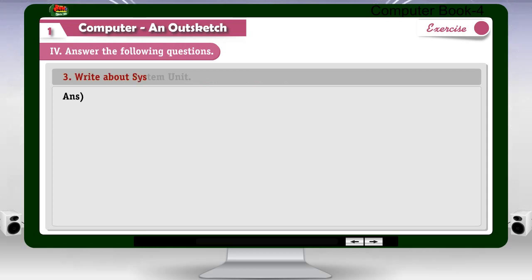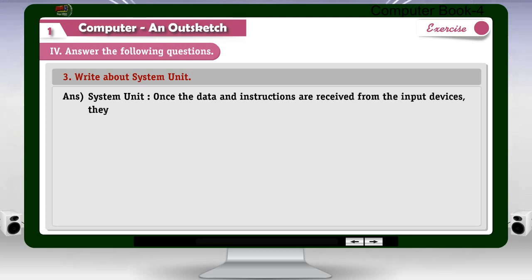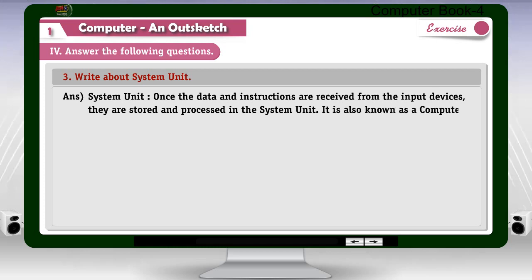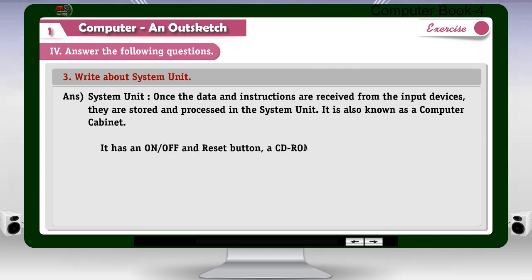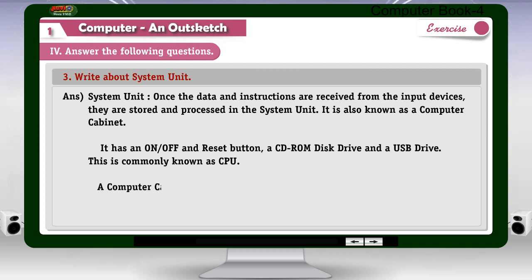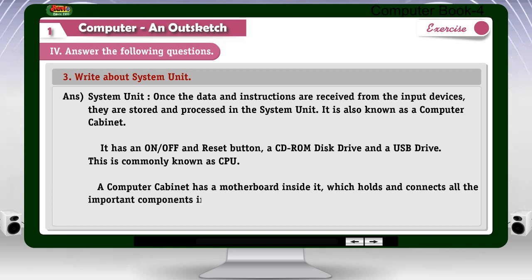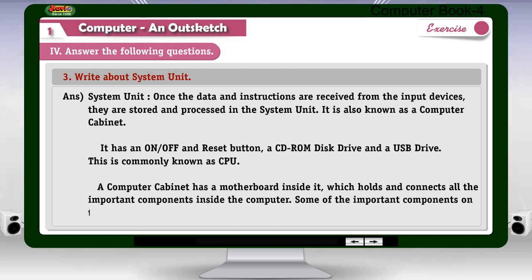Question 3: Write about the system unit. Answer: Once the data and instructions are received from the input devices, they are stored and processed in the system unit, also known as a computer cabinet. It has on/off and reset buttons, a CD-ROM disk drive, and a USB drive, commonly known as CPU. A computer cabinet has a motherboard inside it, which holds and connects all important components such as CPU, memory, and storage devices.